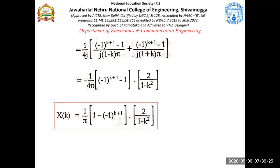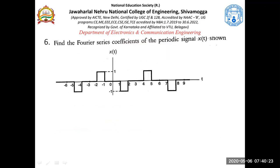To find coefficients X(1), X(2), X(3), substitute different frequency values of k into the generalized equation. Since drawing the spectrum was not explicitly asked, we won't plot the magnitude or phase spectrum here. But if asked, you would substitute k = 0, ±1, ±2, etc. to obtain the spectral values.